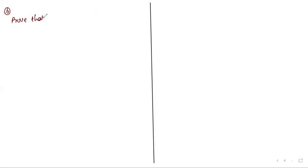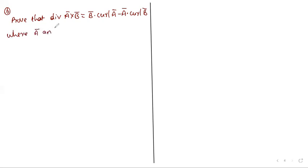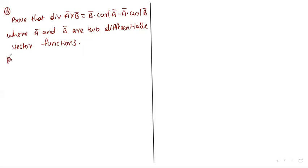Identity 6: Prove that div(Ā cross B̄) equals B̄·curl(Ā) minus Ā·curl(B̄), where Ā and B̄ are two differentiable vector point functions.